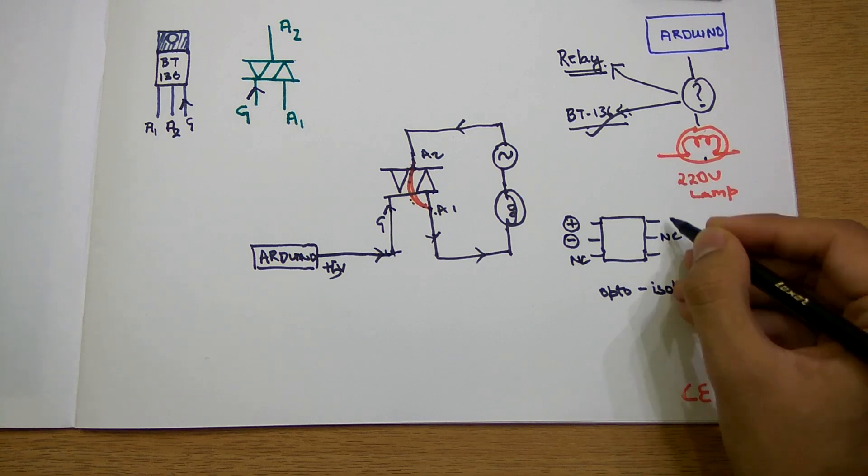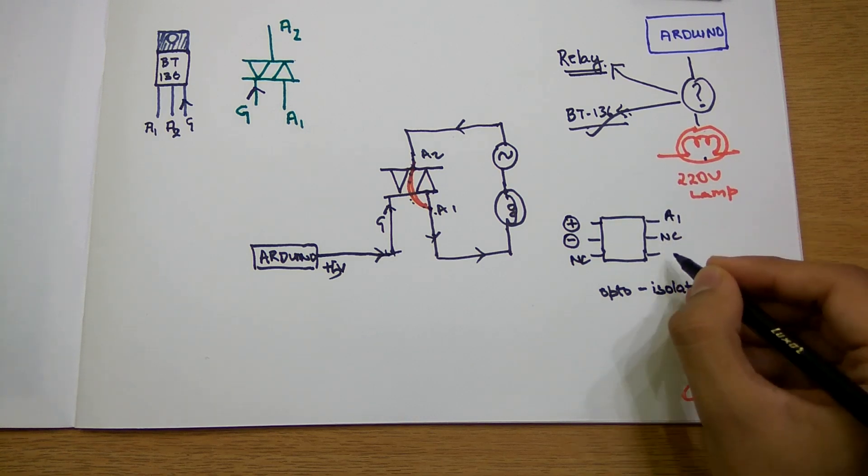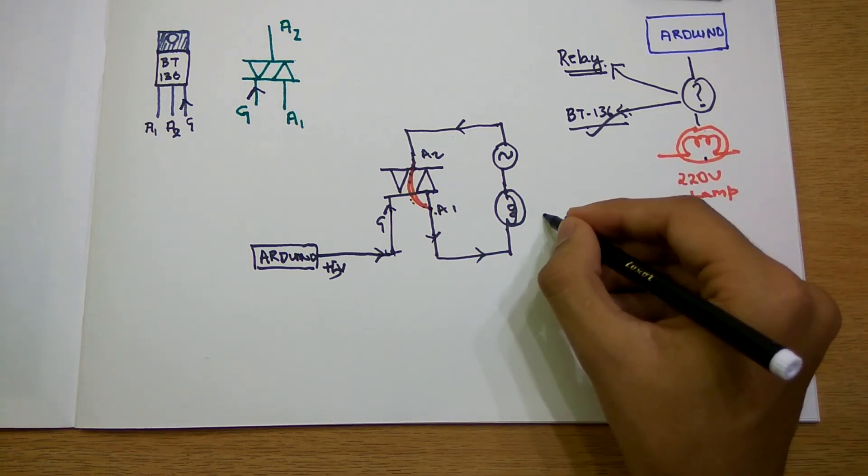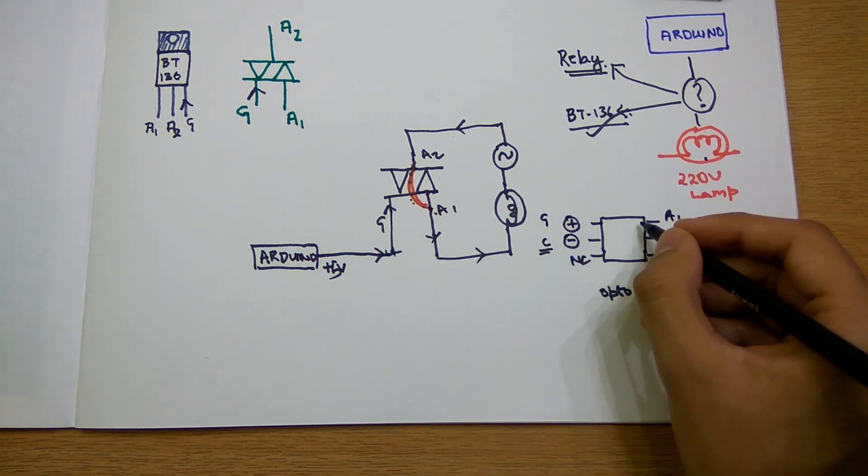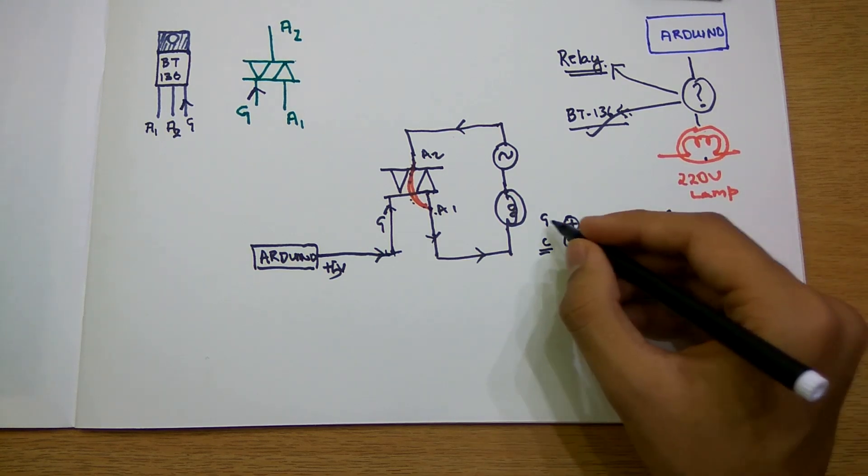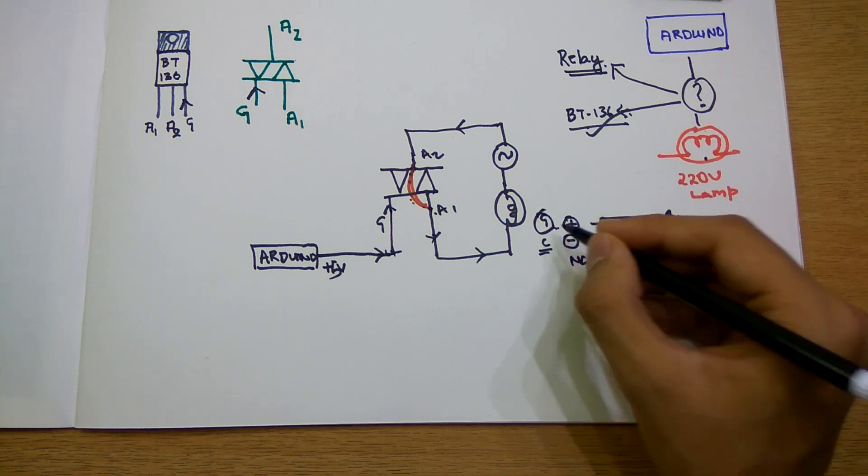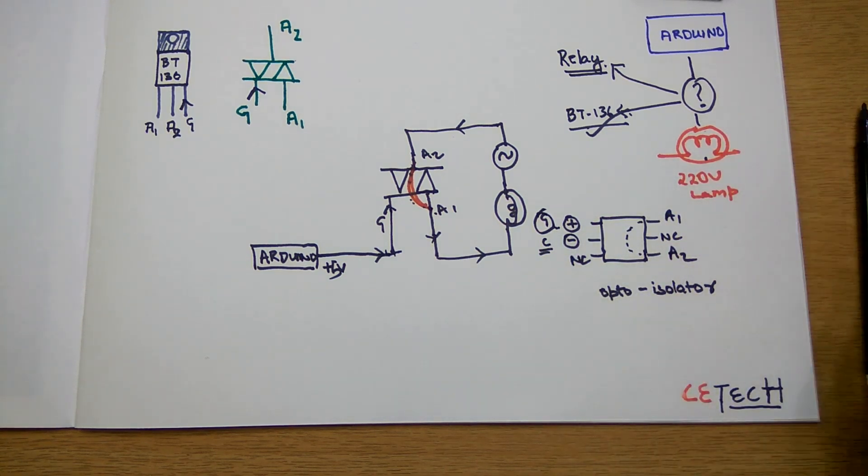These two will be connected to A1 and A2, this will be connected to gate, and this will be common. This opto-isolator will now connect these two when a signal is received in the gate.